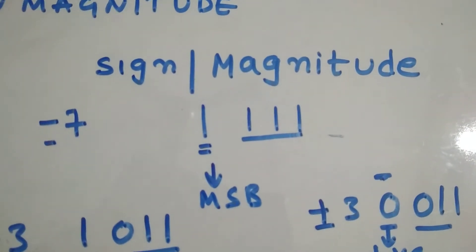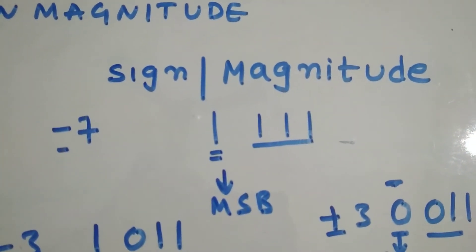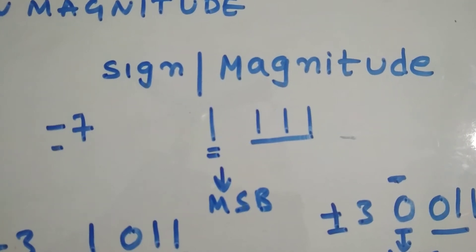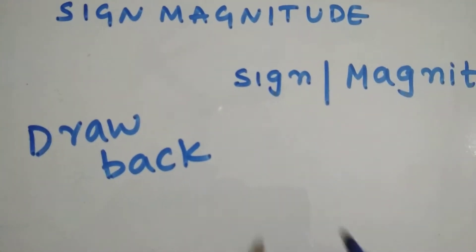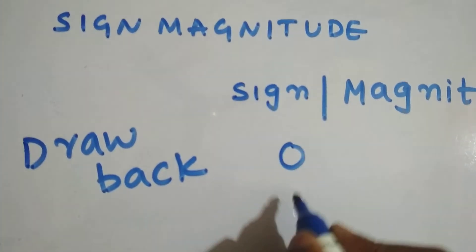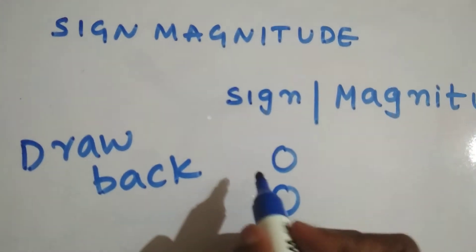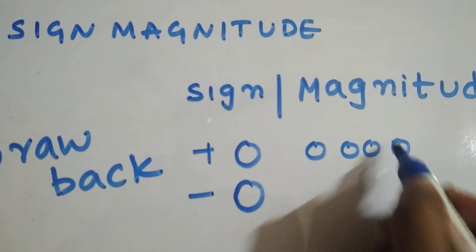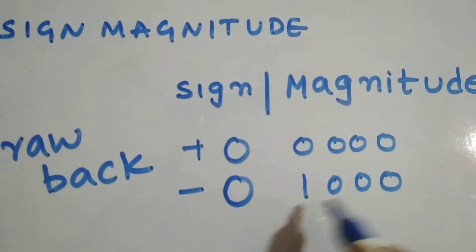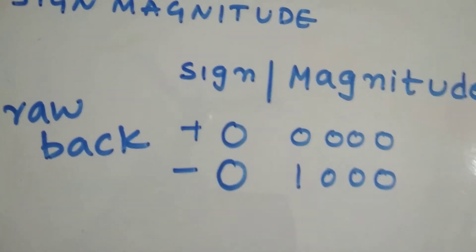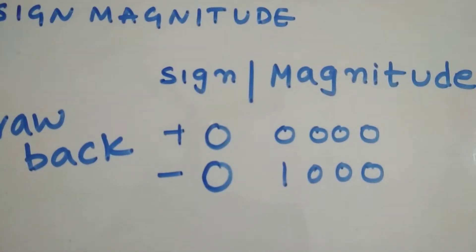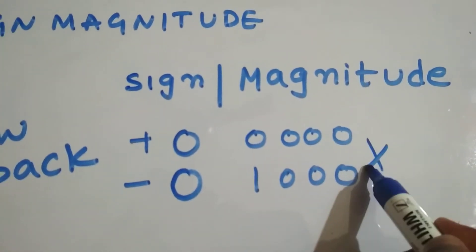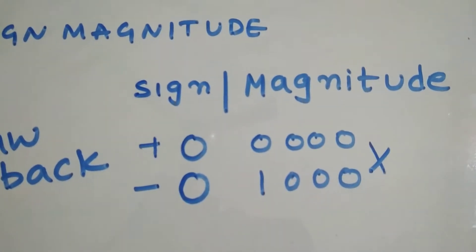So now let's look at the problem with signed magnitude form — why it's not preferred, and why we go with another method for representing signed numbers. The major drawback of signed magnitude form is that we have two zeros: a positive zero (0 0 0 0) and a negative zero (1 0 0 0). We should not have two zeros — one zero is sufficient. This is the major setback of signed magnitude form.